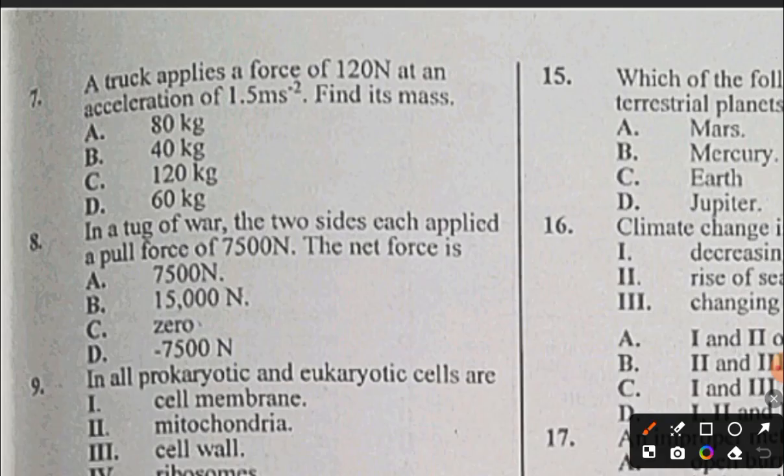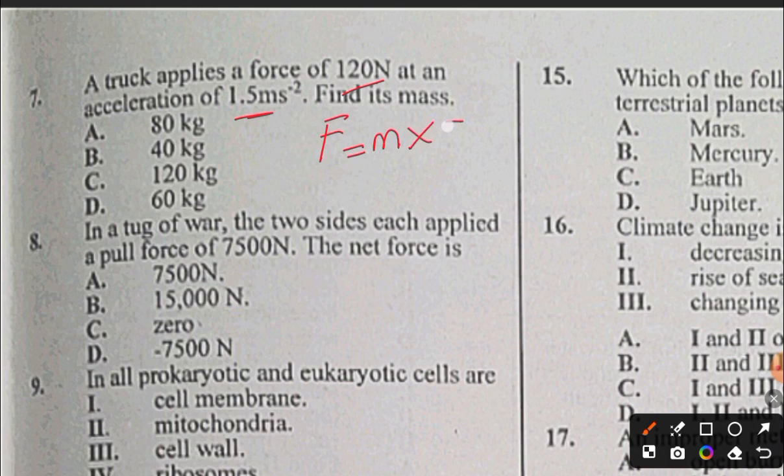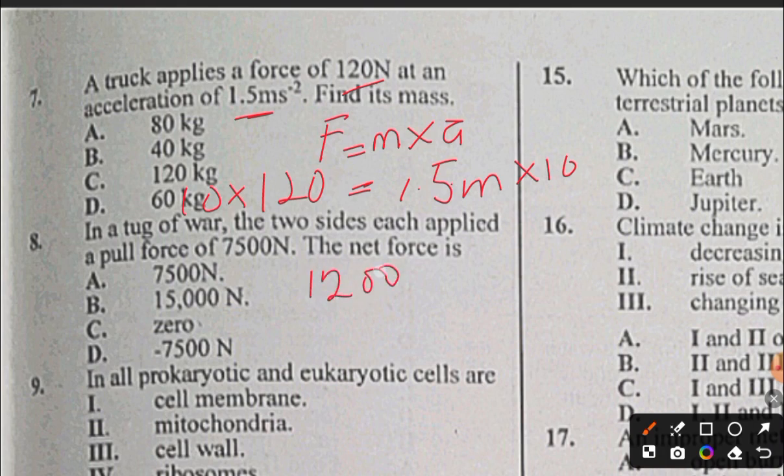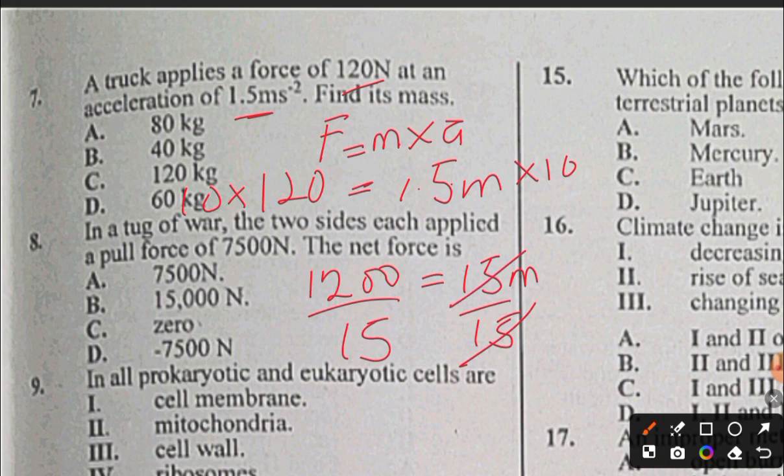Question 7: A truck applies a force of 120 newtons at an acceleration of 1.5 meters per second squared. Find its mass. As I stated earlier, force equals mass times acceleration. So we are finding mass here. Force is 120 newtons, acceleration equals 1.5 m/s². Multiply by 10 to get 1200 equals 15m, so 1200 divided by 15 equals 80 kilograms. So number seven is A.